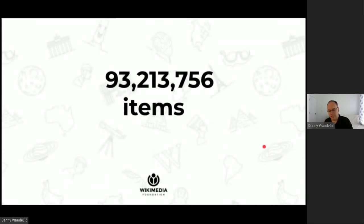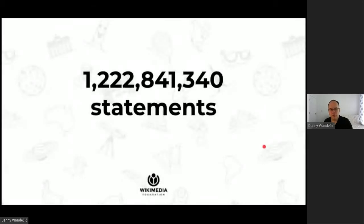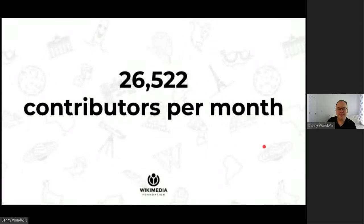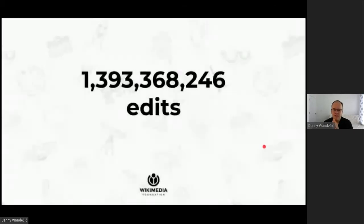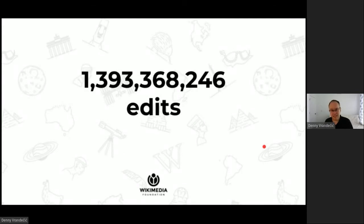Wikidata has items describing more than 93 million topics with more than 1.2 billion statements — connections and values between those topics. It has more than 26,500 monthly active contributors who have performed almost 1.4 billion edits. Last year Wikidata became the first wiki ever to cross more than 1 billion edits, followed by the English Wikipedia earlier this year, just in time for Wikipedia's 20th anniversary.